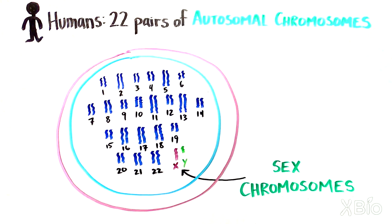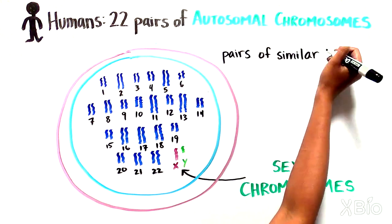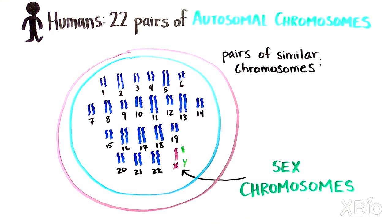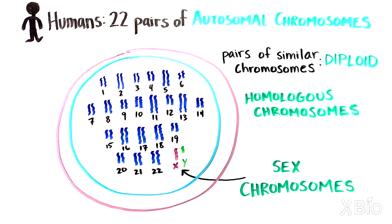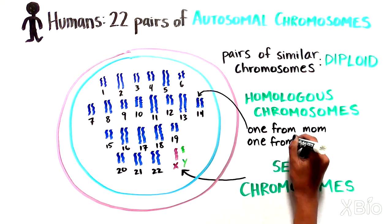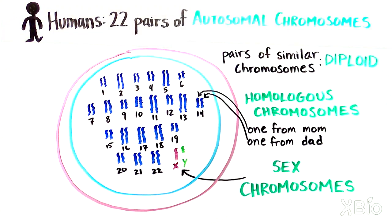Most of our cells, apart from sperm or eggs, have pairs of similar chromosomes. This makes us overall diploid organisms. These pairs of chromosomes, which are called homologous chromosomes, are very similar but not identical, as one is from mom and one is from dad.